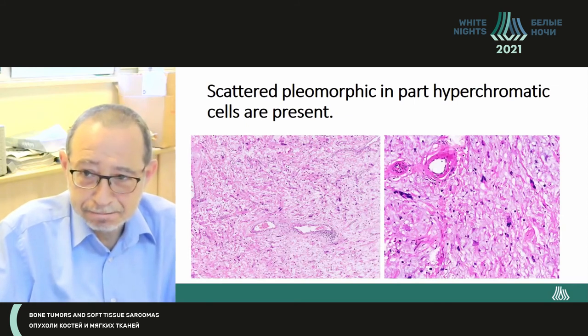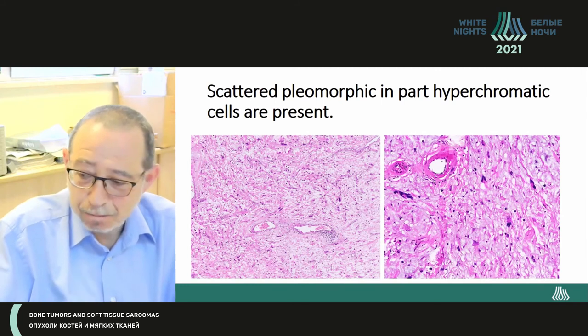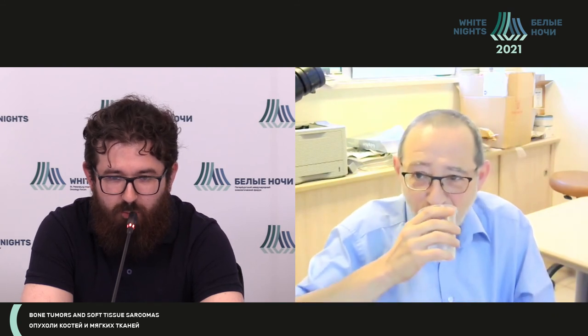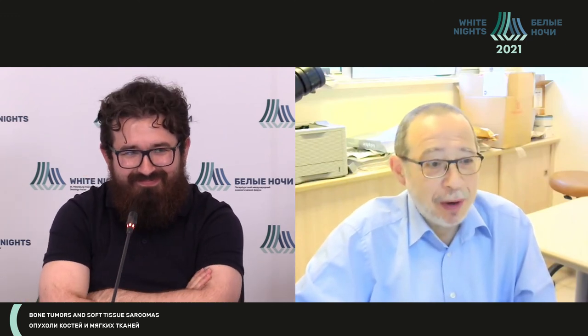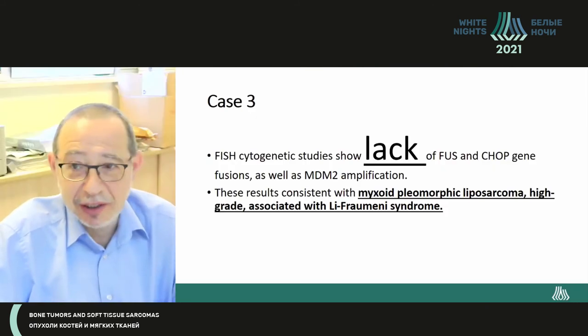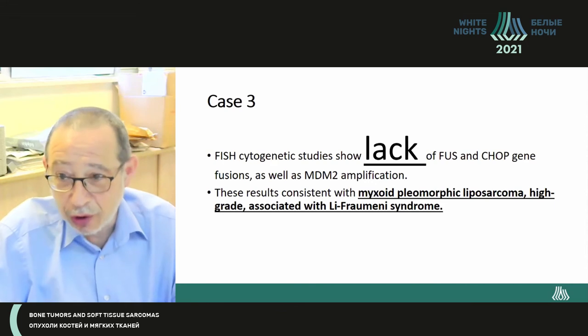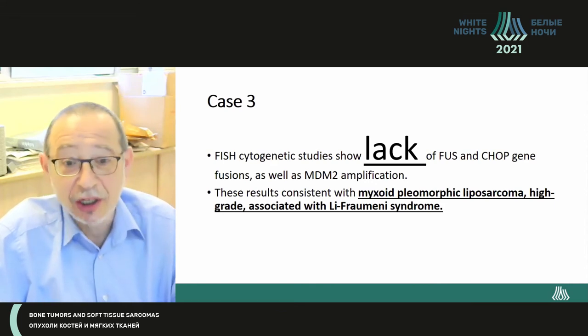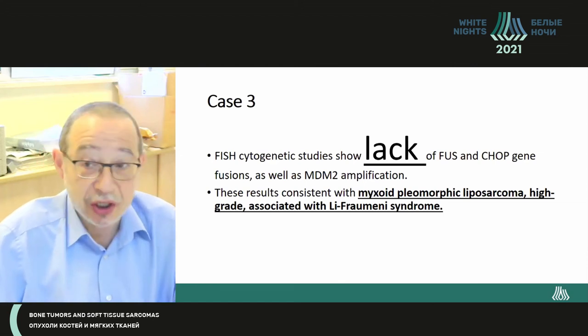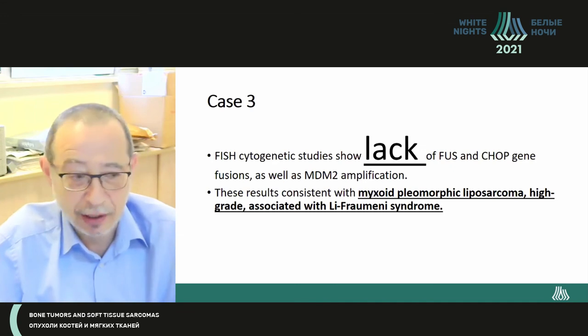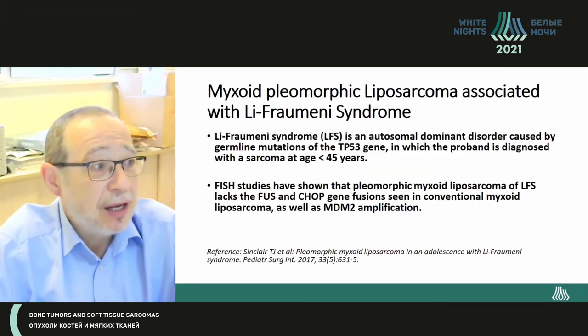For the diagnosis: I would assume the new nosology which appeared in the WHO classification — myxoid pleomorphic liposarcoma — which was established due to the absence of the typical genetic rearrangement found in classic myxoid liposarcoma. It's an absolutely proper diagnosis. Yes, we had a similar case. Our diagnosis is myxoid pleomorphic liposarcoma, high-grade, associated with Li-Fraumeni syndrome, which appeared in the latest WHO classification as a separate group of sarcomas.